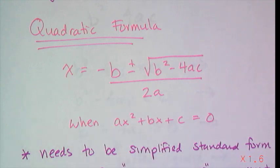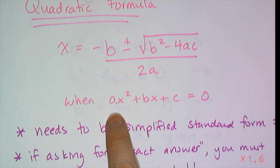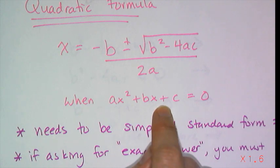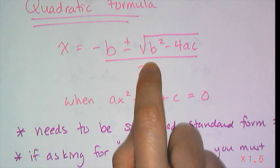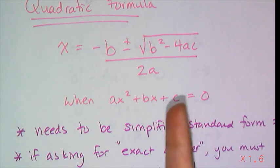What this formula gives you is the value of x when you're given some equation in this format, meaning simplified standard form, ax squared plus bx plus c equals 0. So if I ask you to solve a quadratic that looks like this, all you have to do is plug in the a, b, and c into this formula, and it gives you those x values.